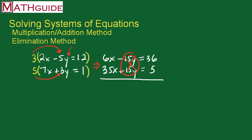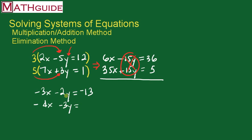I want to try another equation to show you how to prepare using the multiplication and addition method. So let's try: negative 3x minus 2y equals negative 13. And we've got negative 4x minus 3y equals negative 19. Here we've got two equations, and again I'd like to use the addition method. Unfortunately, you can see that the coefficients are not opposite in value — in fact, everything is negative in this particular situation.